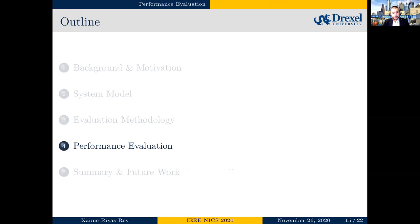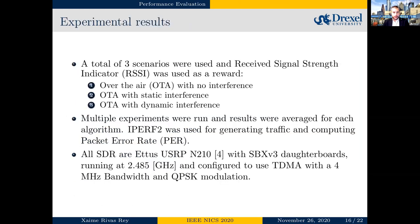We run a total of three experimental scenarios. The first is an over-the-air experiment with no interference. The second has static interference — the jammer fixed in one position. The third has dynamic interference — the jammer moves mid-experiment. All experiments are run multiple times for each algorithm and scenario, and results are averaged. Iperf was used to generate traffic and compute packet error rate, and all SDRs were the same model.